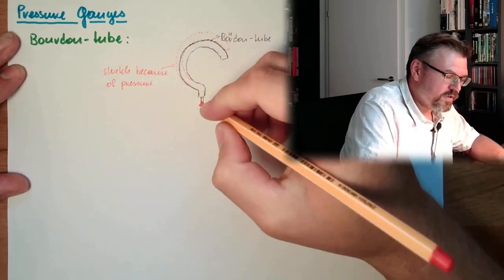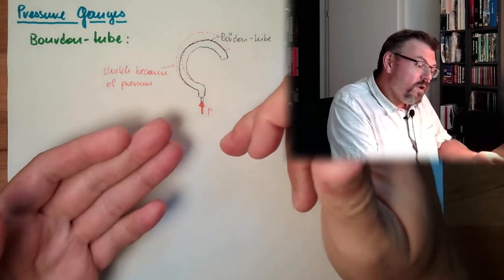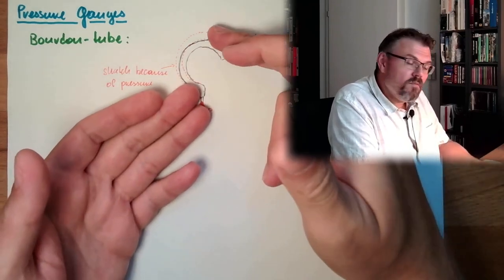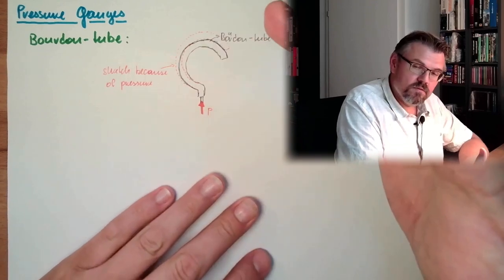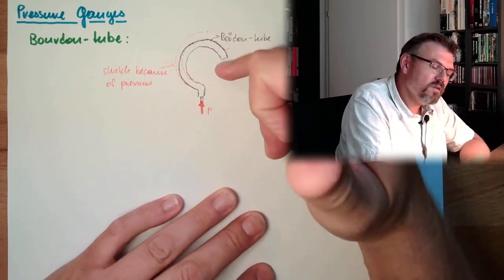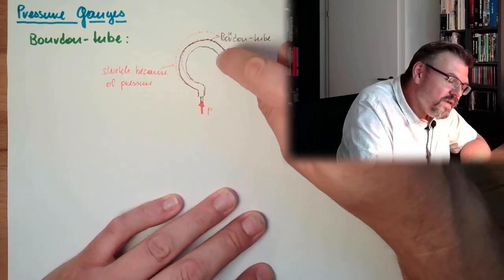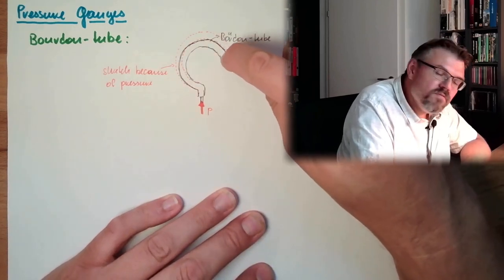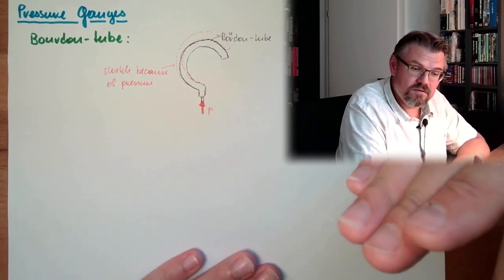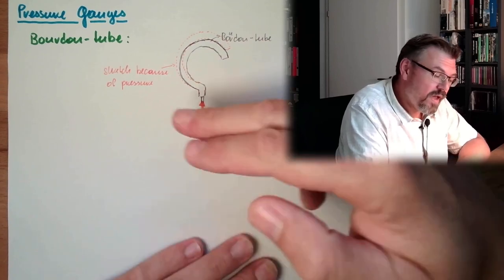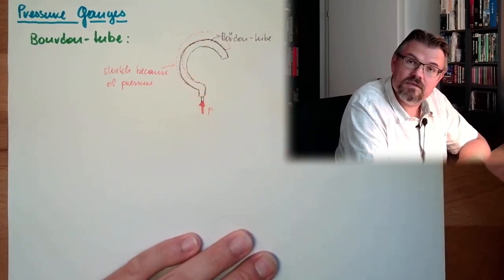And because this is an elastic element, it will get deformed, and it will stay stable. At a certain pressure, the deformation will be at a certain level, and that's it. The only thing I have to do is take this deformation, gain it somehow with some sort of gearbox, and put a pointer to it. That's it.